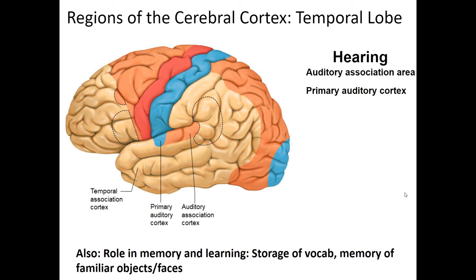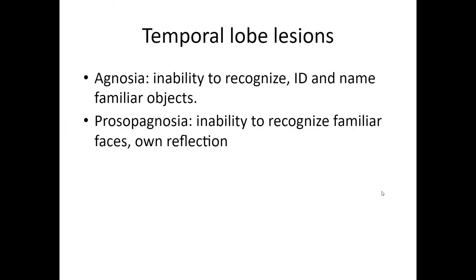The temporal lobe is primarily associated with hearing and also stores information for vocabulary and memory of familiar objects and faces. Damage can cause agnosia — the inability to recognize familiar objects (for example, feeling a pen in your pocket but not knowing what it is). Temporal lobe damage can also cause prosopagnosia — the inability to recognize familiar faces, including your own reflection in a mirror.